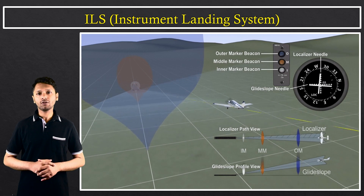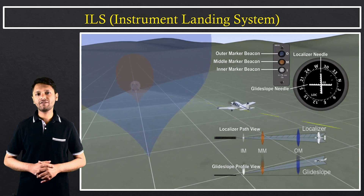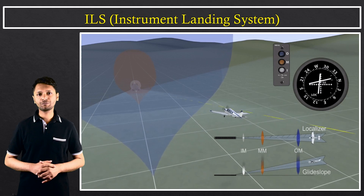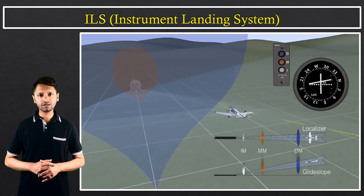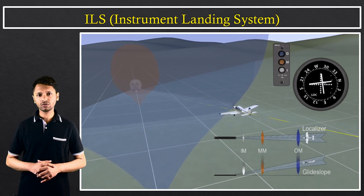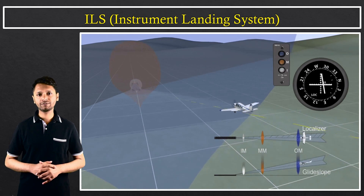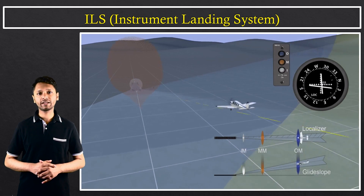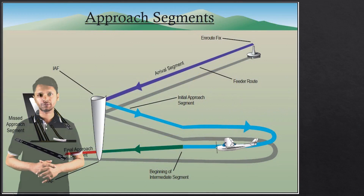It's a ground-based airport navigation aid, where range information is provided by marker beacons and visual guidance is provided by specific approach landing configurations.